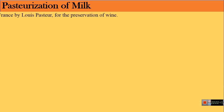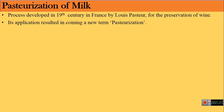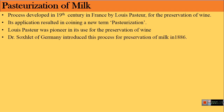What is pasteurization? Pasteurization is the process developed by scientist Louis Pasteur in the middle of the 19th century in France for the preservation of wines. The application of this process resulted in the coining of a new term in the field of science — pasteurization. Although Louis Pasteur was the pioneer in the use of heat treatment for the preservation of wine, Dr. Sockslett of Germany introduced this process for the preservation of milk in 1886.